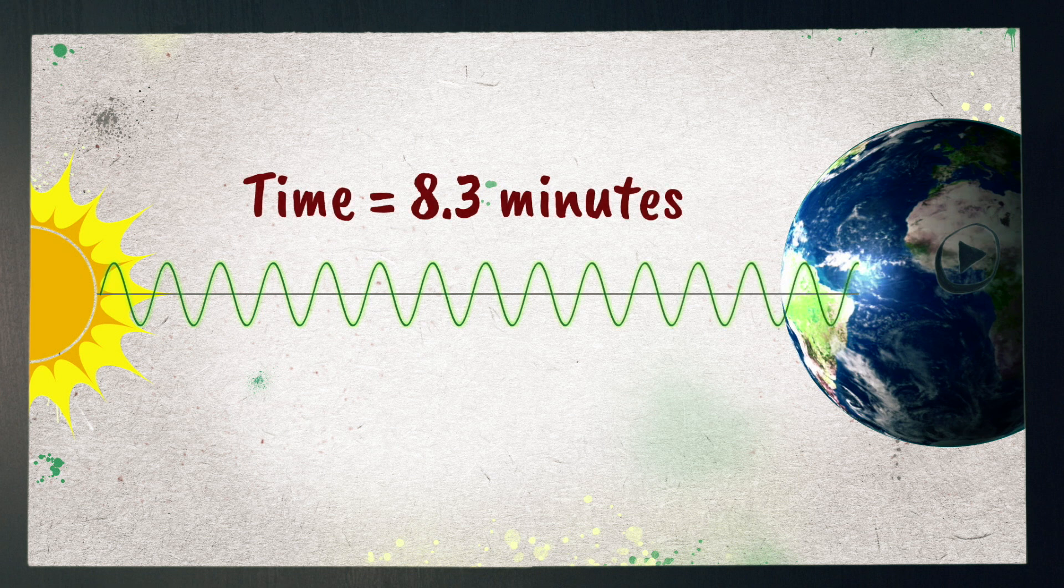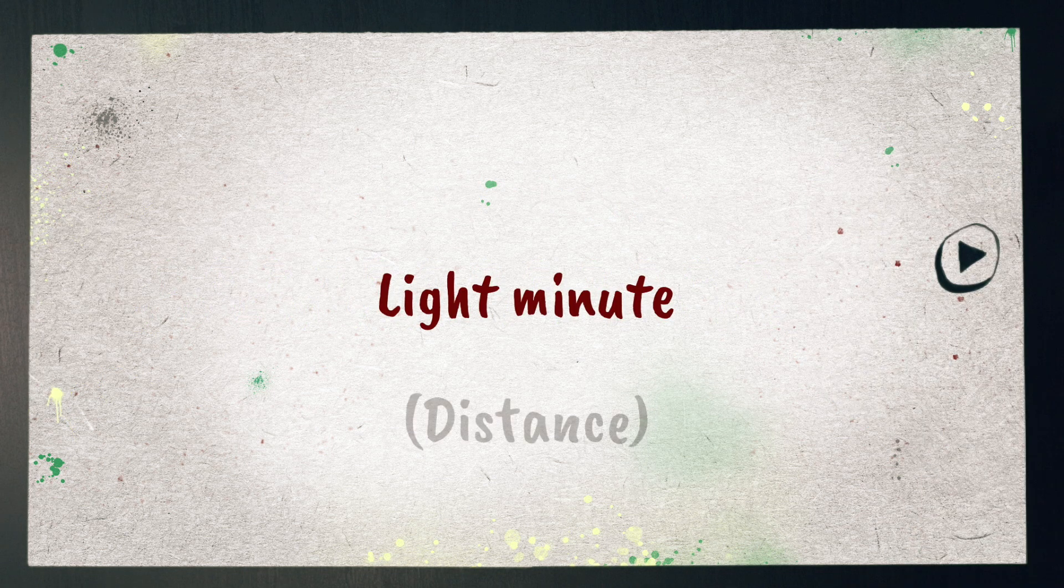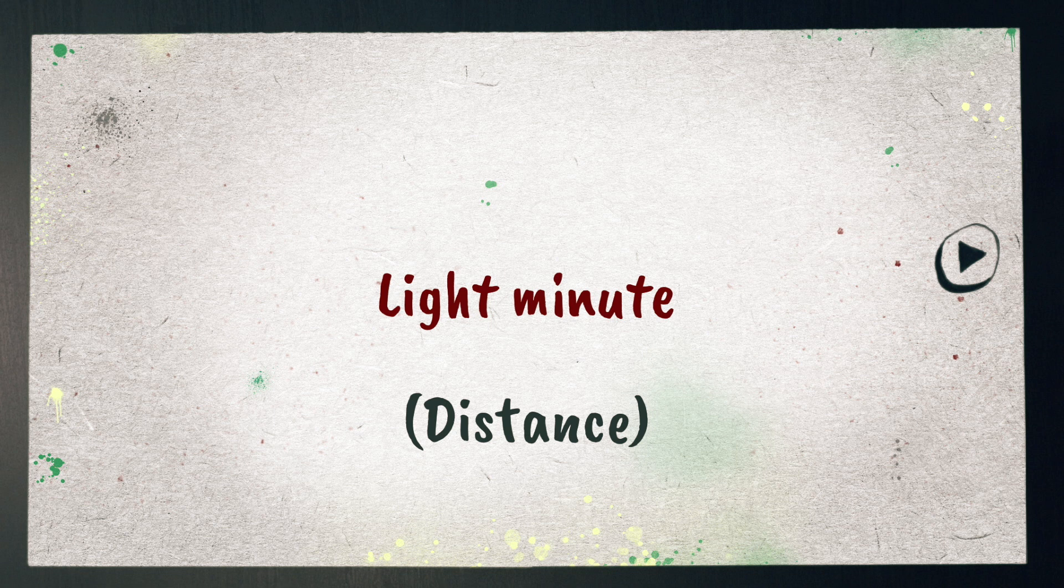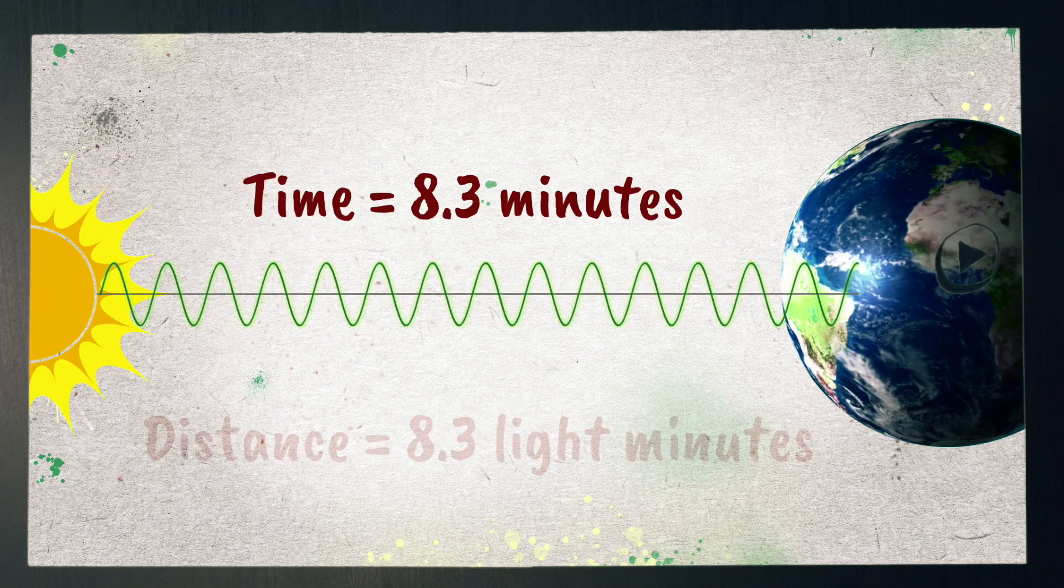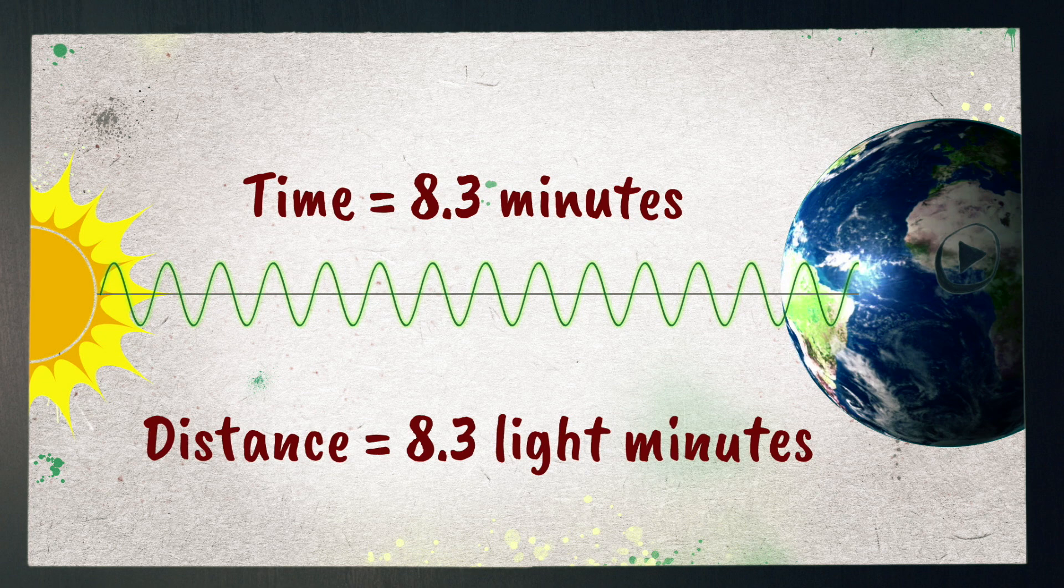Because we have to talk about such big distances in space, the very fast speed of light is often useful in describing these distances. One light minute is the distance, not the speed or time, that light travels in a minute. So we can say that the sun is 8.3 light minutes from earth.